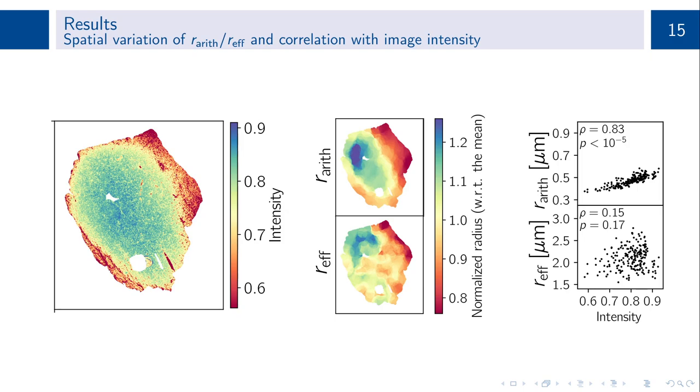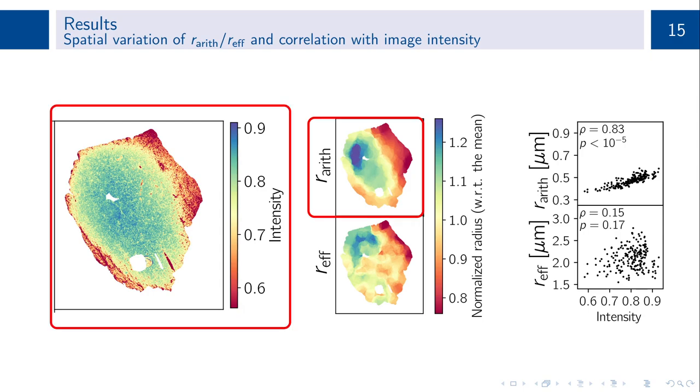To evaluate the potential of our pipeline to capture spatial and anatomical variation across whole LSLM sections, we assessed the spatial variation of the ensemble axon radii and investigated whether they were affected by the image or staining intensity. For this, we generated spatially smoothed maps of the arithmetic mean radius and the effective radius. The maps were normalized to the section mean. Whereas the pattern of the arithmetic mean radius resembled that of the image intensity, the pattern for the effective radius did not.